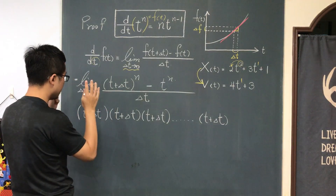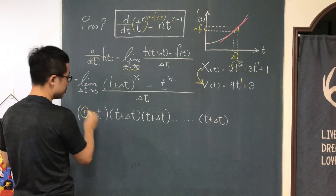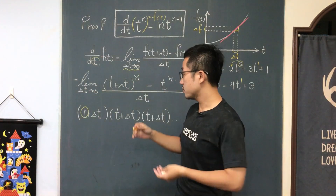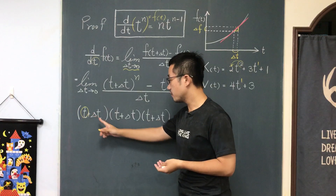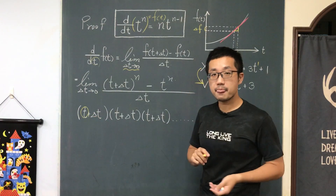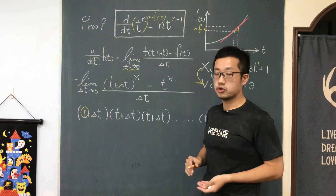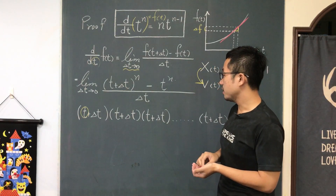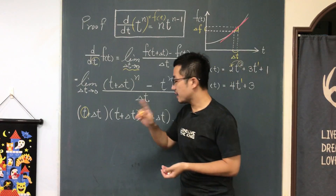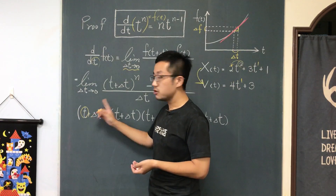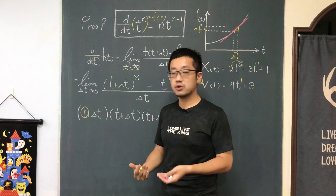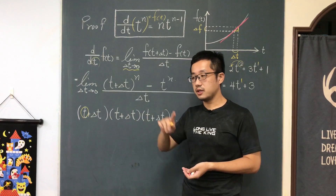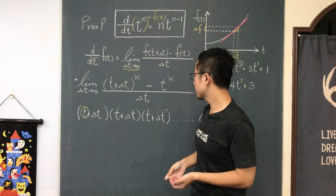I have many options — I can choose t from the first term, the second term, and so on. I want to choose n t's from all of them. So the first term is n choose 0 times tⁿ times Δt to the zero power. Anything to the zero power is 1.